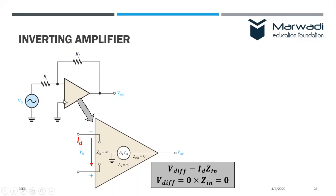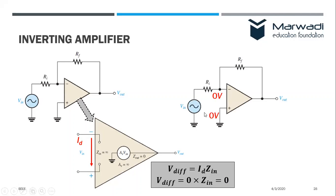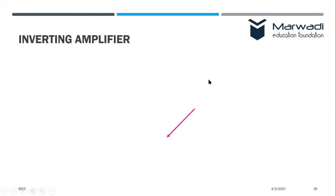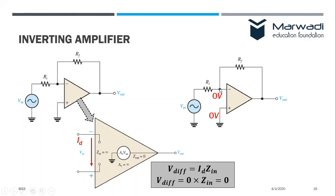That means the voltage drop from the inverting terminal to the non-inverting terminal is zero — it is almost a short. Because the potential at the non-inverting terminal is zero and the drop between non-inverting and inverting terminals is zero, the potential at this junction will also be zero. This concept is known as virtual ground. The point of connection between the input impedance and the feedback resistance is called virtual ground.